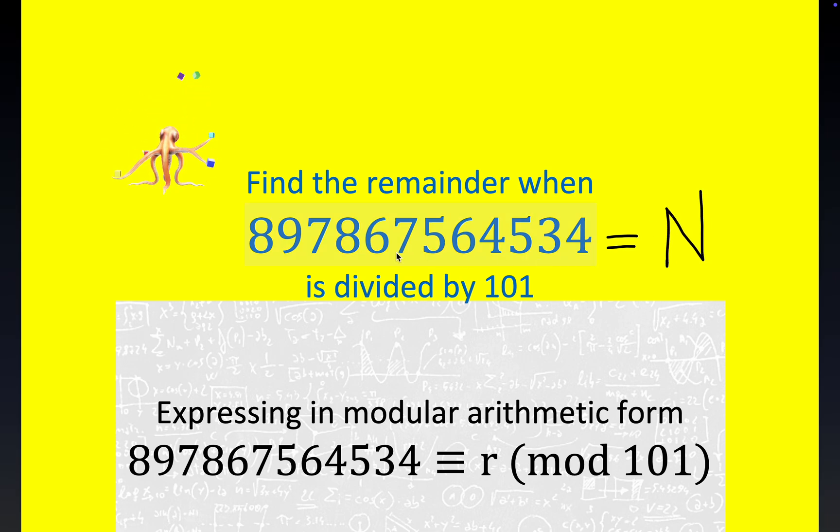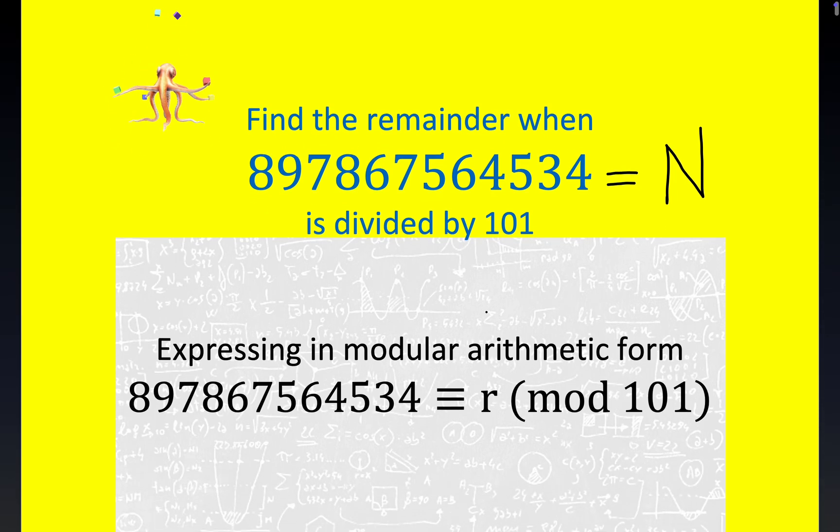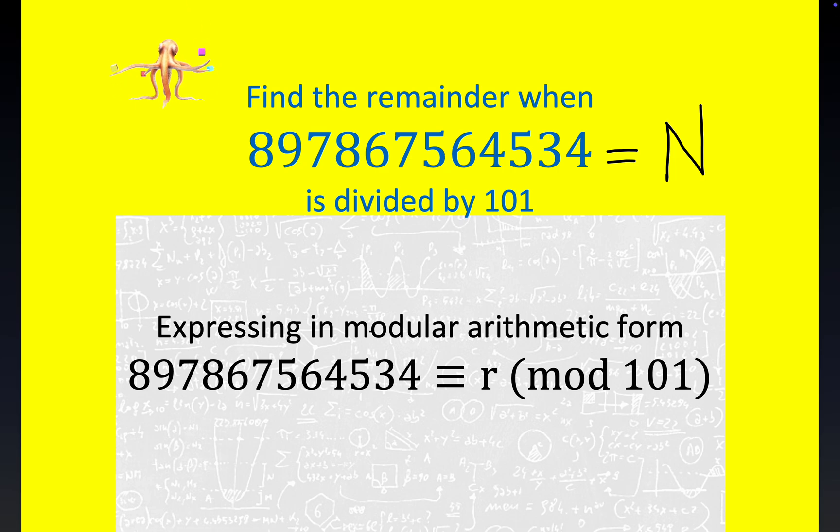Again, it's a 12-digit number. We're looking for the remainder when we divide this 12-digit number by 101. Now, I'm going to do it in a modular arithmetic fashion because this statement right here, our 12-digit number congruent to R, R standing for remainder, mod 101, is equivalent.